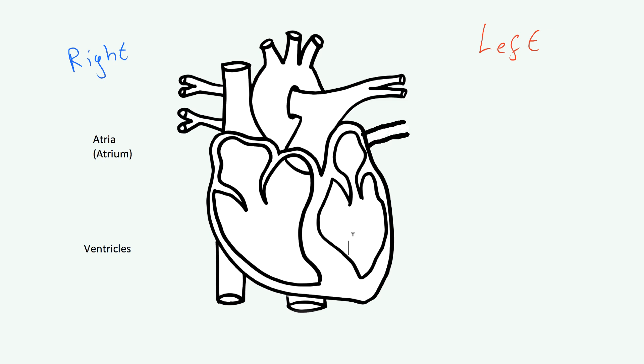The roles are quite simple: blood comes into the heart into the atria — the right atrium and the left atrium — and then the ventricles' job is to pump the blood elsewhere. So the atria receive the blood and the ventricles pump the blood, which is why it's split into separate compartments.